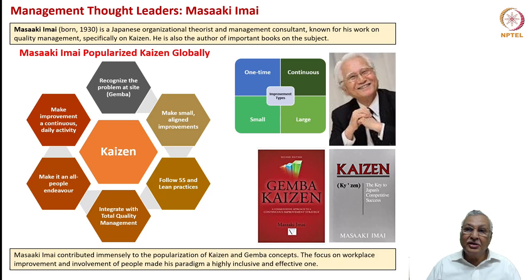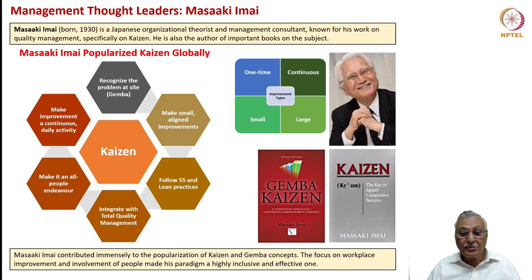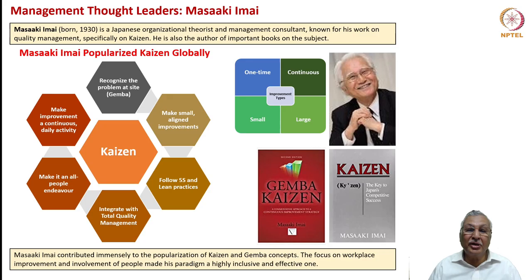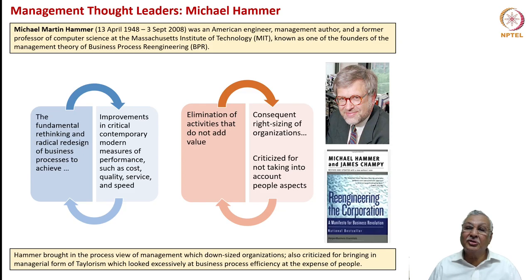He said that executives wanting to improve a situation must recognize the problem at site — Gemba — make small aligned improvements, follow Five S workplace cleanliness and lean practices, integrate Kaizen with the total quality management system of the company, make it an all-people endeavor, and make such improvement processes a continuous daily activity with no let-up. He contributed immensely to the concepts of Kaizen and Gemba, and was able to make his processes inclusive by bringing people along with him.